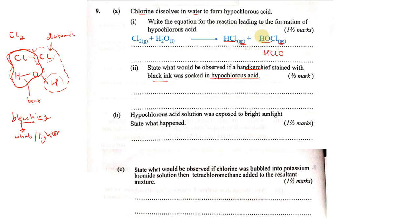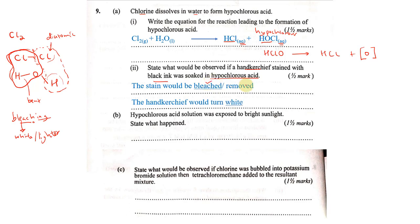The bleaching property of chlorine is due to the formation of hypochlorous acid. This hypochlorous acid is unstable and will break down into hydrochloric acid and nascent oxygen — a free oxygen atom. This free oxygen atom plays a part in the bleaching properties of chlorine. So what will be observed? The stain will be bleached or removed because it will turn white. The stain would be bleached.